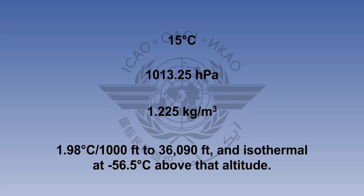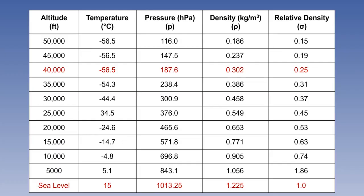And a uniform temperature lapse rate of 1.98 degrees C per thousand feet, up to 11,000 meters, or 36,090 feet, with a constant temperature of minus 56.5 above that level. A tabulated version of ISA is shown on the screen.